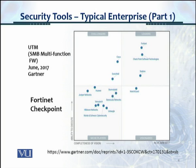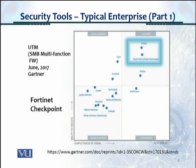The next one is for UTM, which is Unified Threat Management. This is a single device which has multiple functions, and that's why it's called UTM. This is for Small and Medium Business Multifunction Firewall from June 2017. Looking at the top vendors, Fortinet is by far the best one, and then you have Checkpoint as well. So Fortinet and Checkpoint were the best two, with other vendors around them as well.